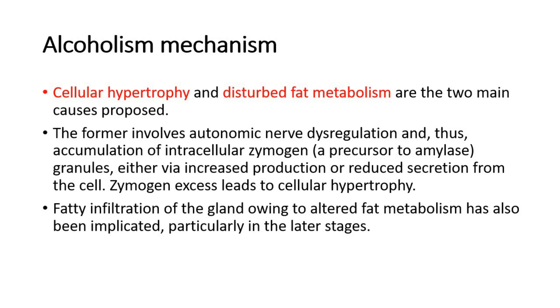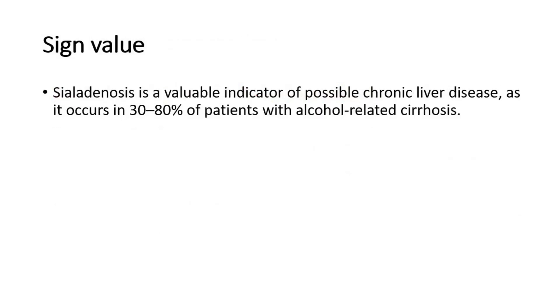Fatty infiltration of the gland owing to altered fat metabolism has also been implicated, particularly in the later stages. For its sign value, sialadenosis is a valuable indicator of possible chronic liver disease, as it occurs in 30-80% of patients with alcohol-related cirrhosis.